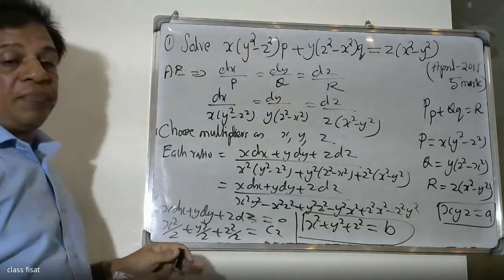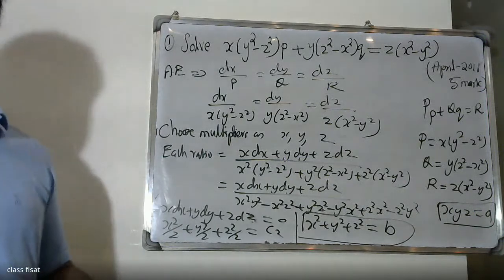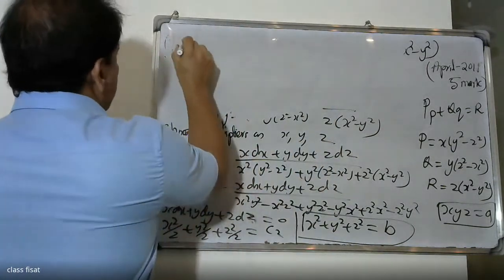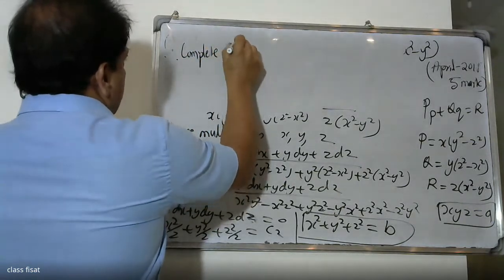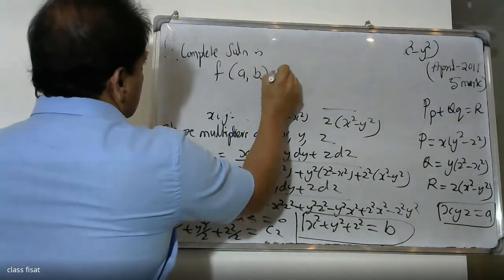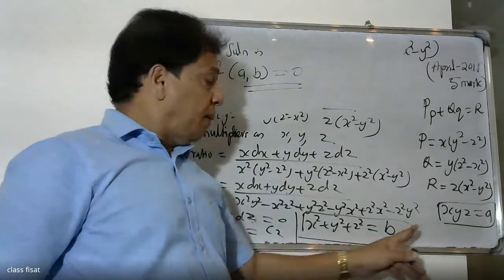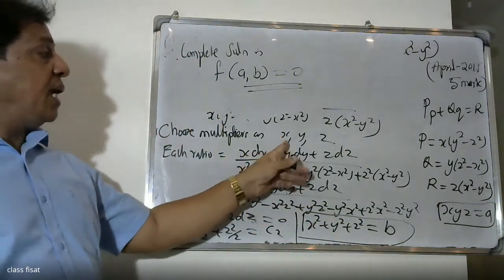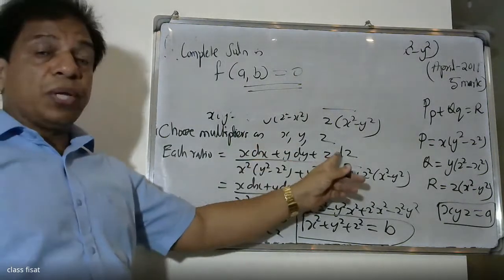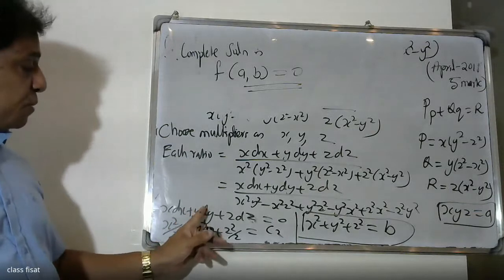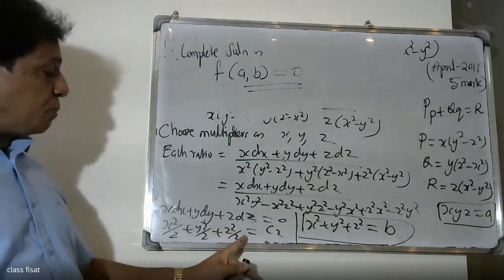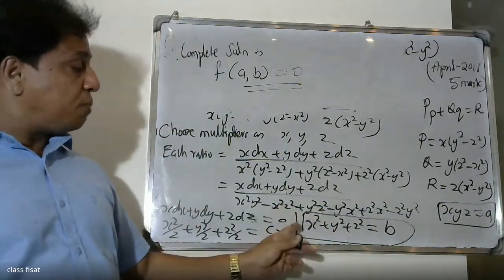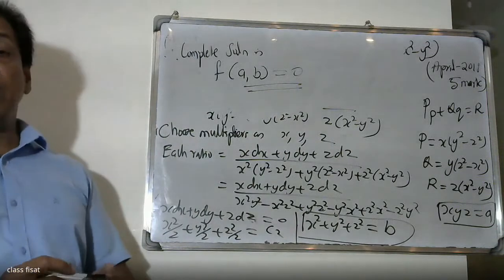Therefore the random constant gives us x² + y² + z² = b as our second constant. Our first constant is xyz = a and our second constant is x² + y² + z² = b. Therefore our complete general solution is f(a, b) = 0, that is f(xyz, x² + y² + z²) = 0.